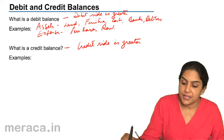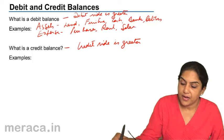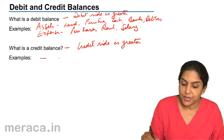Purchases, rent, salary, credit side is greater, what could be the examples?